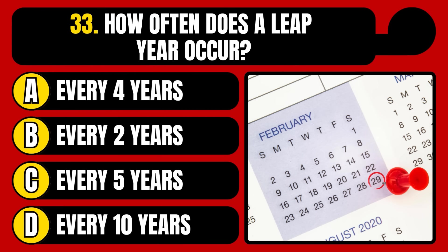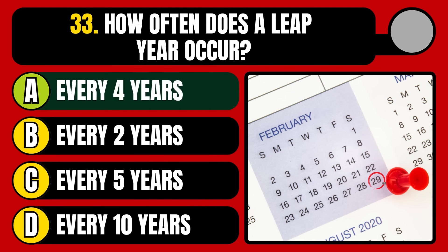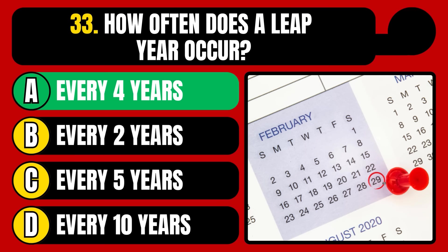How often does a leap year occur? Every 4 years, every 2 years, every 5 years, or every 10 years? The correct answer is option A, every 4 years.